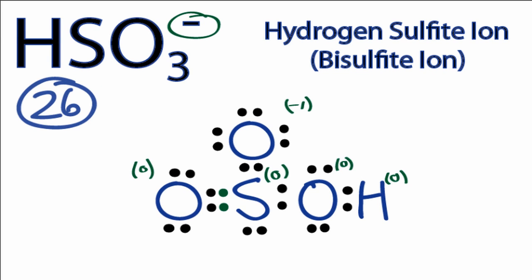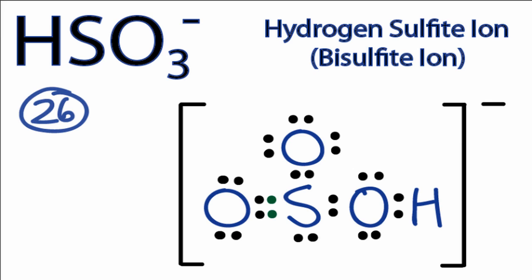So that makes this the most stable Lewis structure for HSO3 minus, and since it is an ion, we'll need to put brackets around it and a negative charge. So that's the Lewis structure for HSO3 minus, this is Dr. B., and thanks for watching.